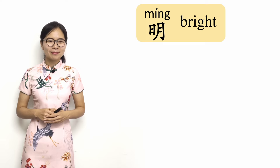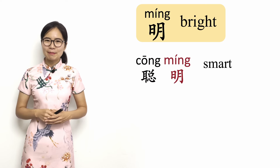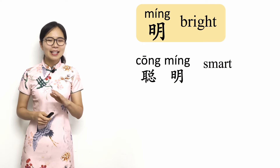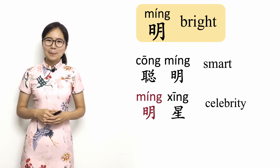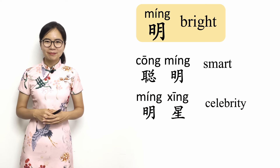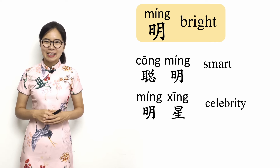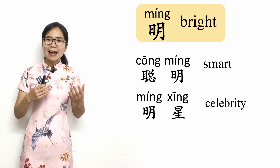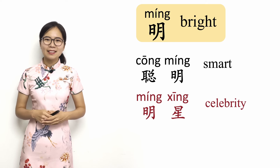Here are some example words. First, 聪明. 聪 means clever, and 明 means bright. Together, 聪明 is used to describe someone as being smart or clever. 聪明, smart. Next, 明星. 明 means bright and 星 means star. Together, 明星 means a bright star. In ancient times, this referred to the planet Venus because it's the brightest object in the night sky after the moon. Nowadays, it's used to refer to a celebrity, like a famous actor, singer, or athlete. 明星, celebrity.